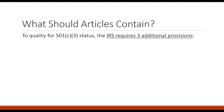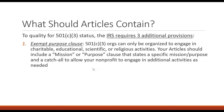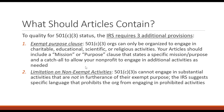Beyond what the DC Nonprofit Code requires in your articles — your name, registered agent, whether you have members, and some basic statements — the IRS requires at minimum three additional provisions if you want to qualify for 501(c)(3) status after you incorporate. These are: an exempt purpose clause, a limitation on non-exempt activities, and a dissolution clause. 501(c)(3) orgs can only be organized to engage in charitable, educational, scientific, or religious activities, so your articles should have a purpose clause stating your specific charitable mission.